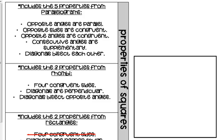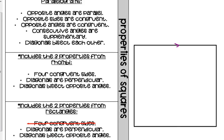Properties from parallelograms: opposite sides are parallel, so the top is parallel to the bottom and the left side is parallel to the right side. The arrows denote parallel lines. Opposite sides are also congruent, and more specifically, all four sides are congruent — we use straight tick marks to denote congruency.